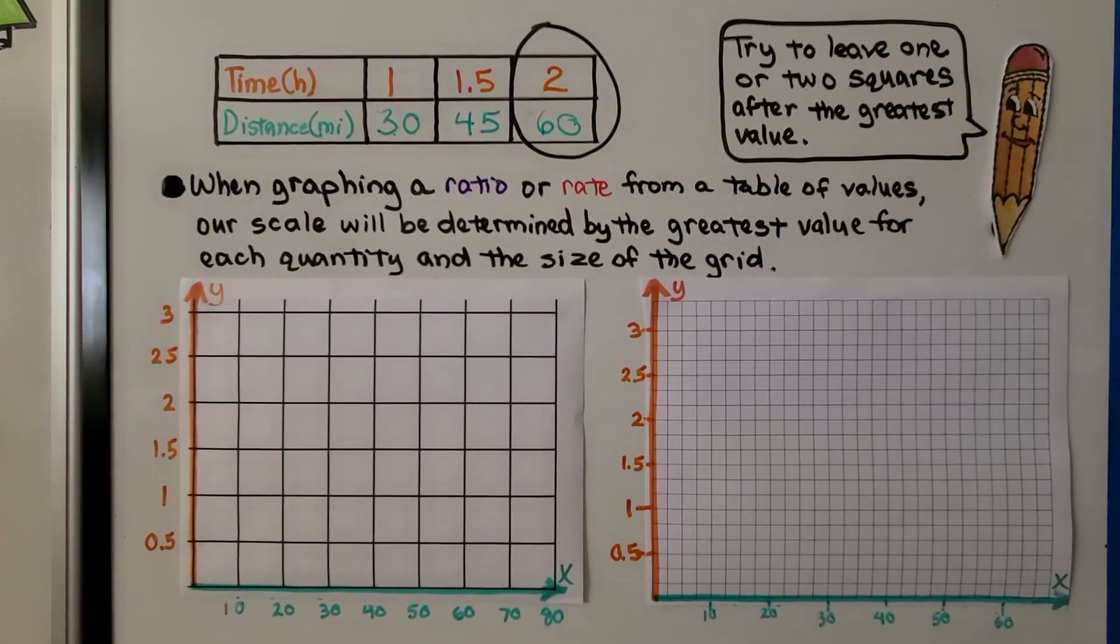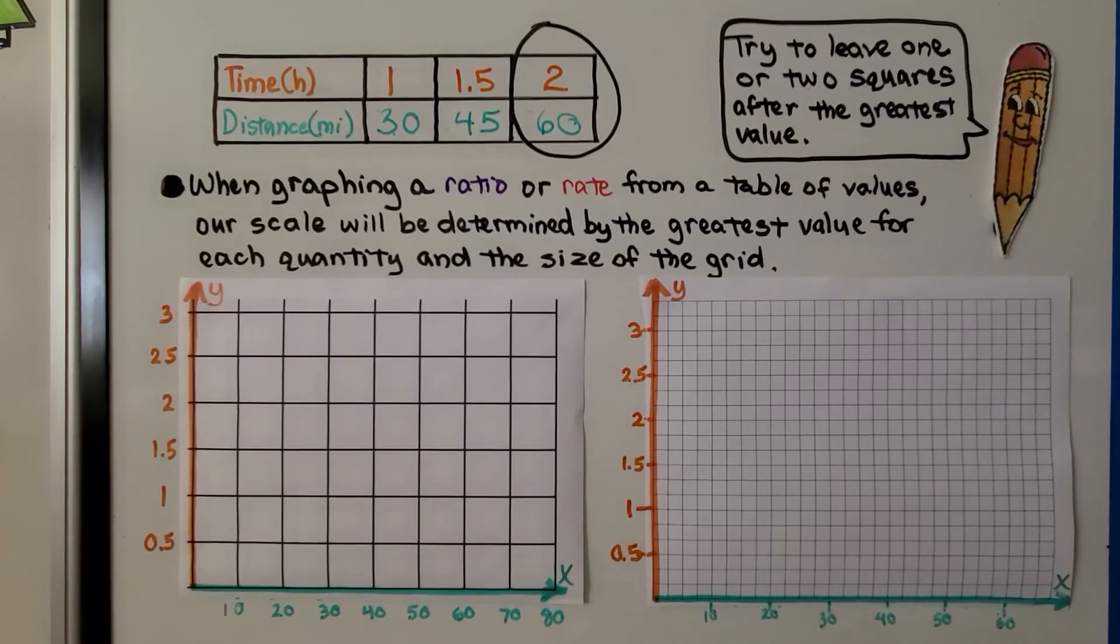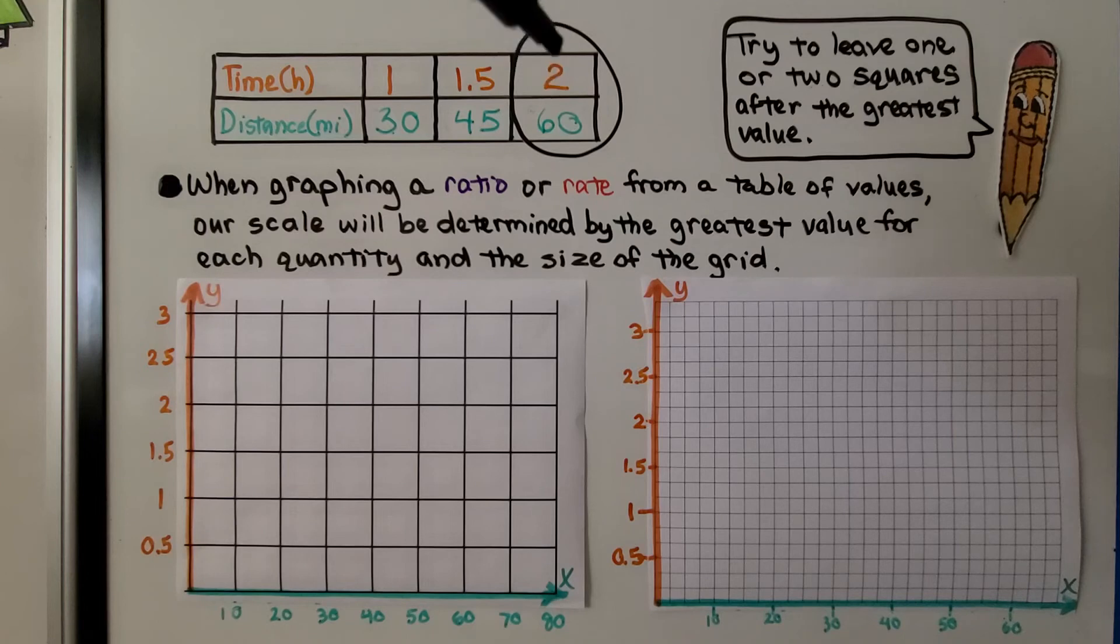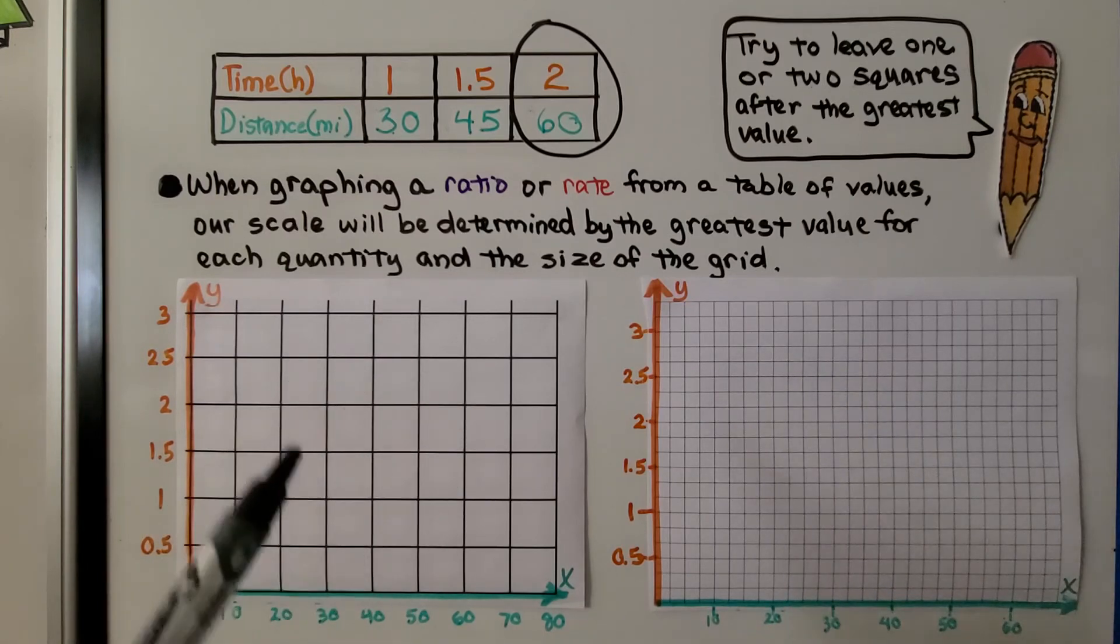When we are graphing a ratio or rate from a table of values, our scale will be determined by the greatest value for each quantity and the size of the grid. Here, our grid is really big. It's got big squares. So, our scale is going to have to be more compact, isn't it? Because we don't have enough lines to make every single number.